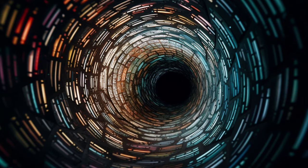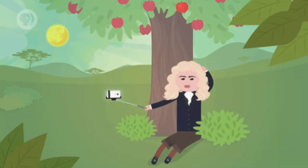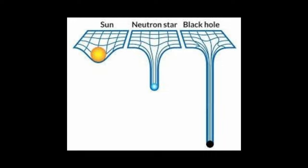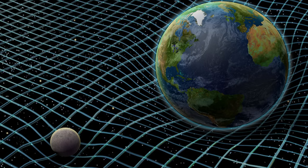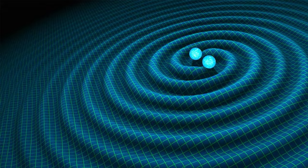Einstein eventually published his article, and his theory shook our understanding of physics by introducing a new perspective on how gravity works. As proposed in relation to Isaac Newton's ideas, the more massive an object, the greater the curvature of spacetime and thus the stronger its gravitational pull. However, there was something missing from his theory — a practical example.